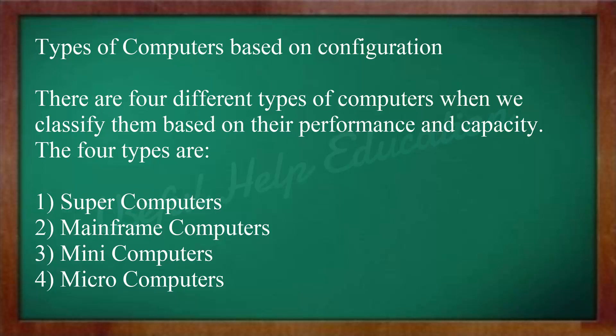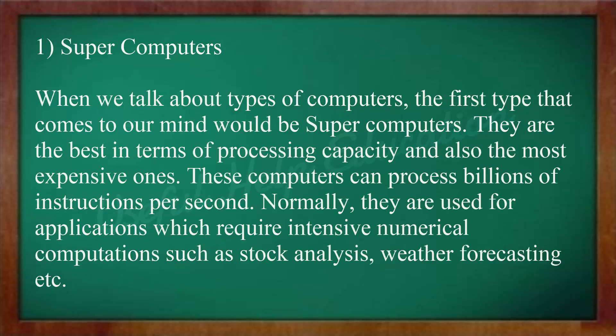Types of computers based on configuration. There are four different types of computers when classified based on their performance and capacity: Supercomputers, Mainframe computers, Mini computers, and Microcomputers. Supercomputers are the best in terms of processing capacity and also the most expensive. These computers can process billions of instructions per second. Normally, they are used for applications requiring intensive numerical computations such as stock analysis and weather forecasting.